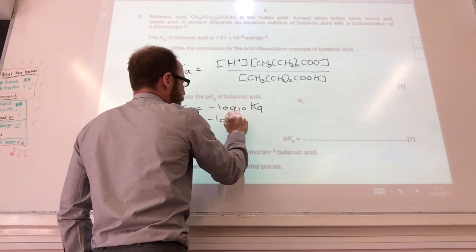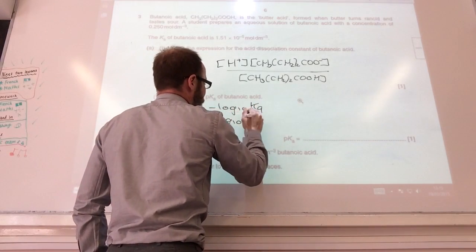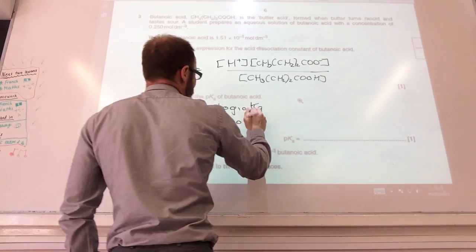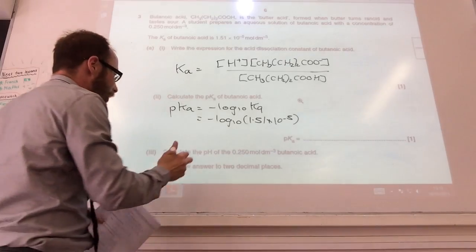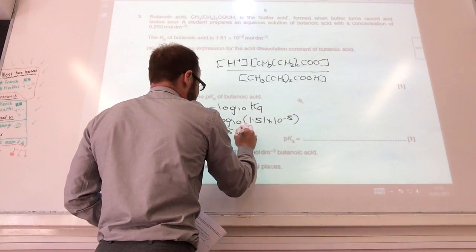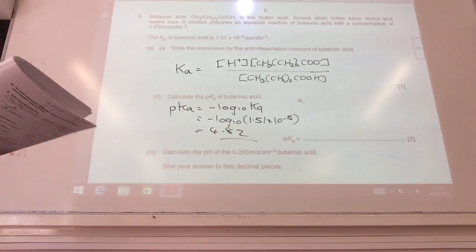If you do that, log to base 10 of Ka, Ka 1.51 times 10 to the minus 5. If you do that in your calculator, you should get it to be 4.82. Well worth checking you can do that in your calculator.